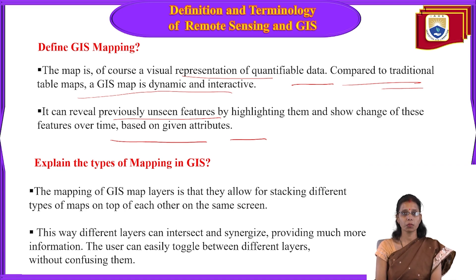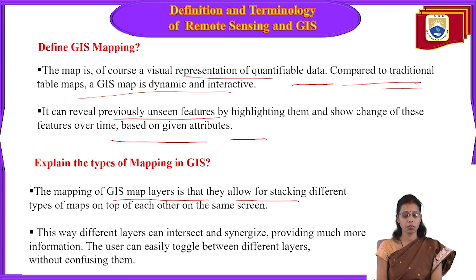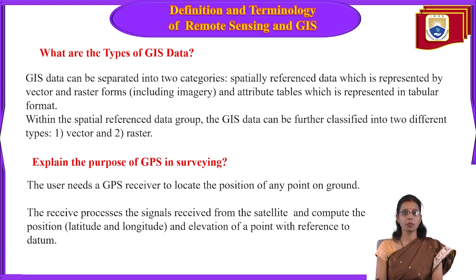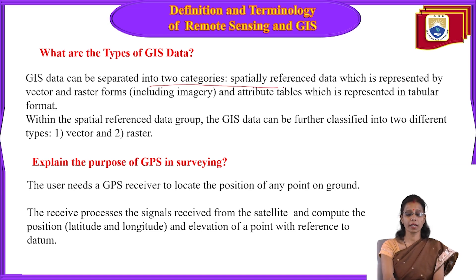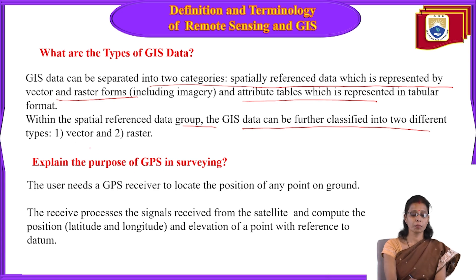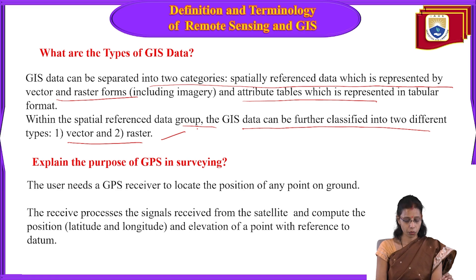Types of mapping in GIS: GIS map layers allow stacking different types of maps on top of each other on the same screen, enabling different layers to intersect and synergize for much more information. GIS data can be separated into spatial reference data (represented by vector and raster forms) and attribute tables (represented in tabular form), classified as raster data and vector data.